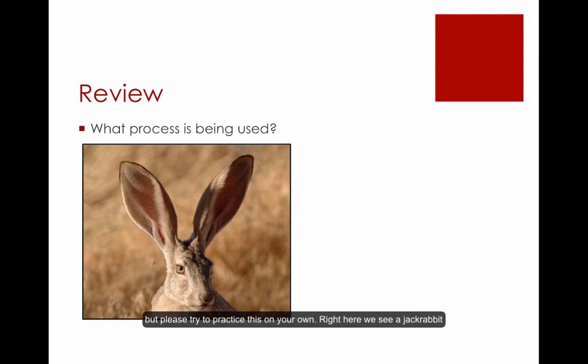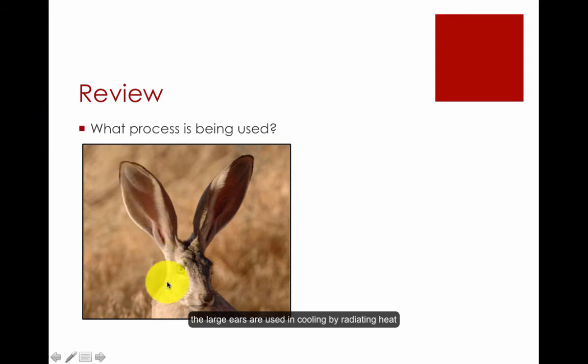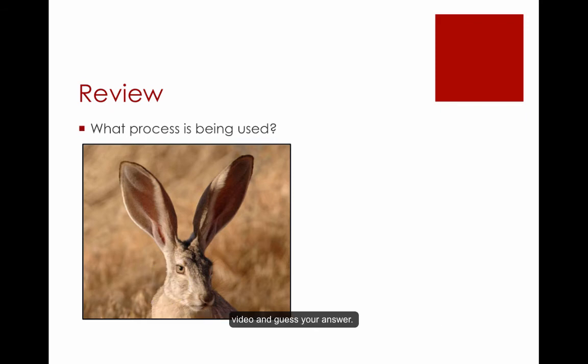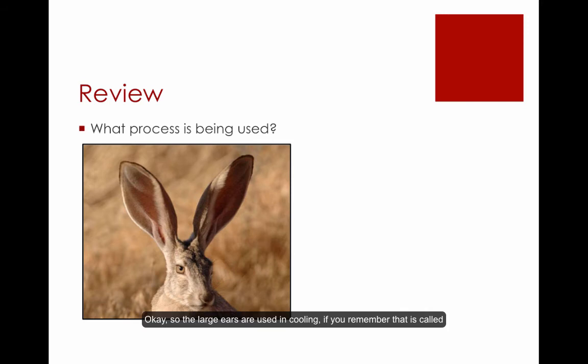Here we see a jackrabbit. The large ears are used in cooling by radiating heat via a large network of blood vessels found in the ear. Please pause the video and guess your answer. The large ears are used for cooling — if you remember, that is called regulation, when organisms use their internal environments.